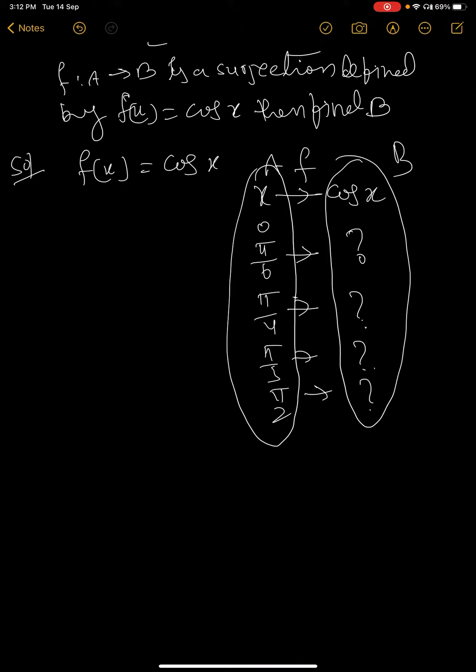So simply you substitute that f(x) = cos x. When x is 0, then cos 0, the functional value is cos 0, which is 1.